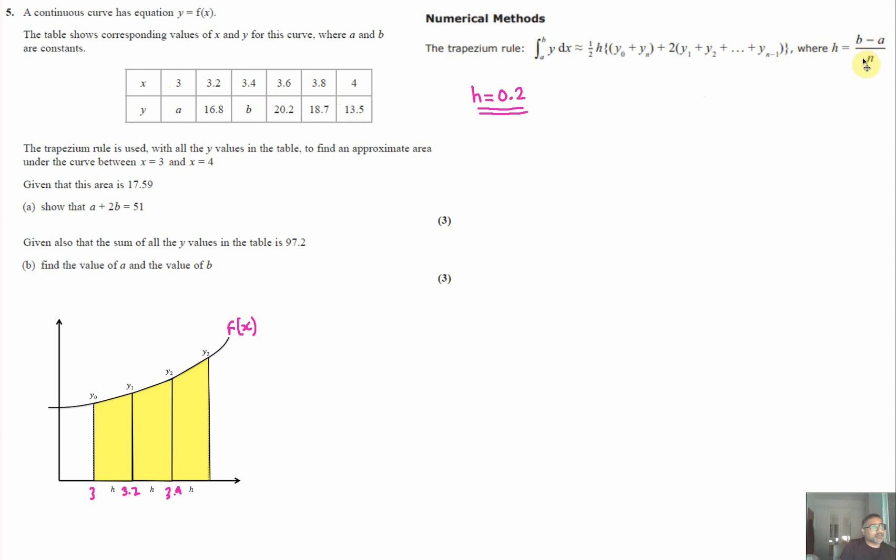If you use the formula, remember there's always one less trapezium than the number of values in the table. This table has six values representing five trapeziums, because each pair of adjacent values represents one trapezium.